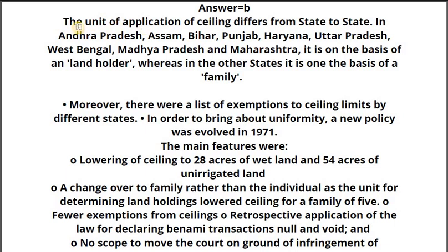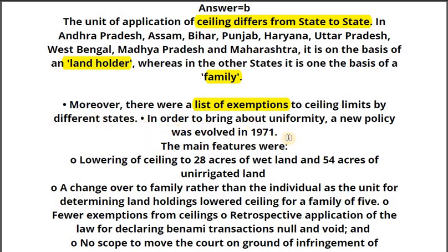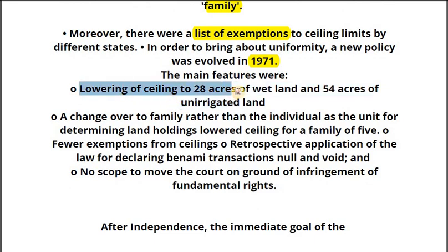Every point on this slide is important. The unit of application of ceiling differed from state to state, since states implemented land reform laws and every state's size is different. In some states the ceiling was applied on the basis of an individual landholder; in others it was on the basis of the family. That's why statement A is incorrect — we must remember the unit varied by state. There was also a list of exemptions. In 1971, the government came up with a new uniform land reform policy.